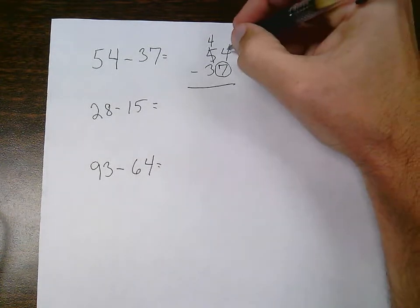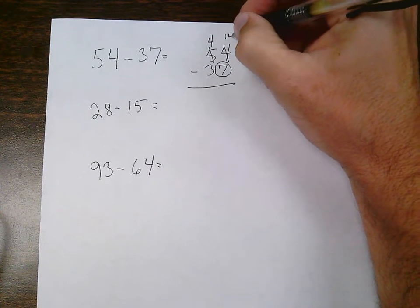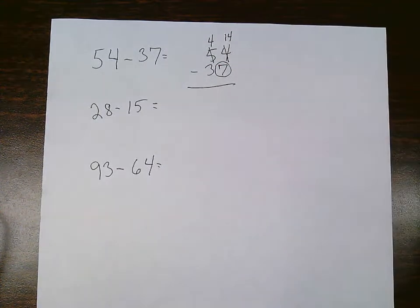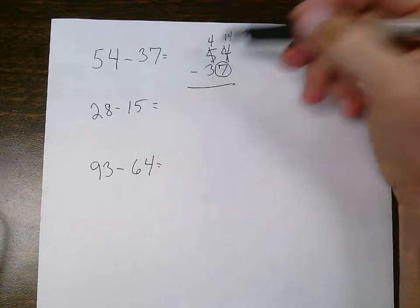So the 4 gets 10 more cookies. I cross that off and make it a 14. And that works because the tens place is 10 times greater than the ones place.